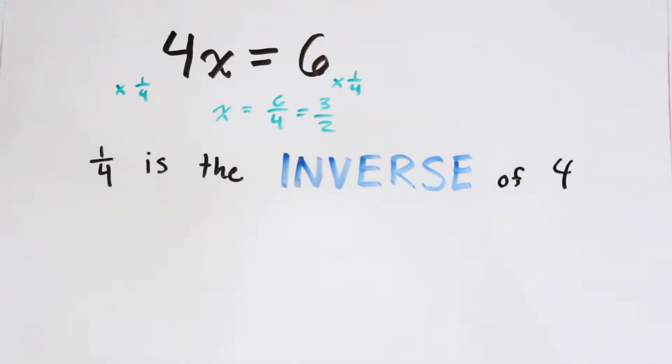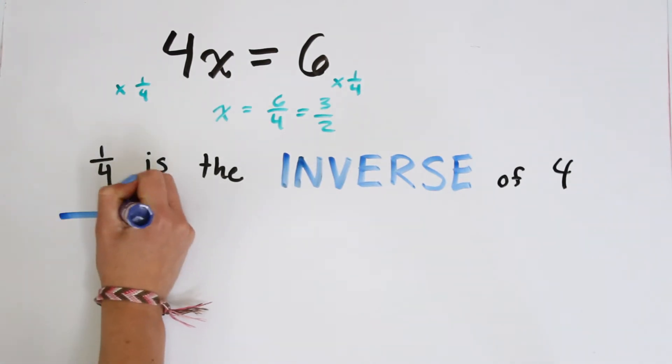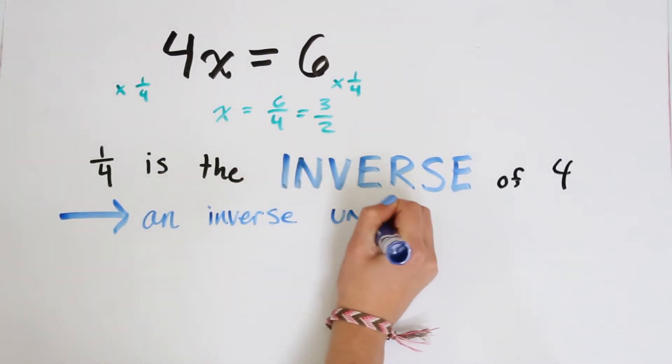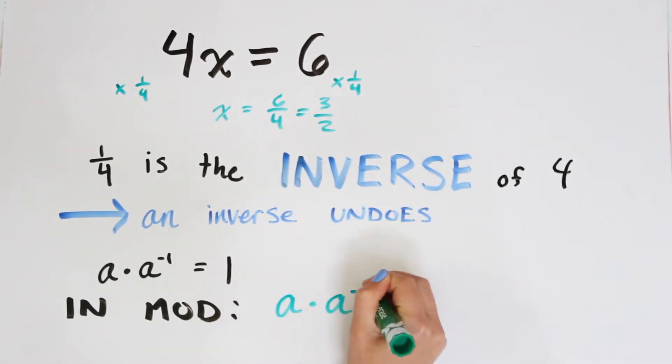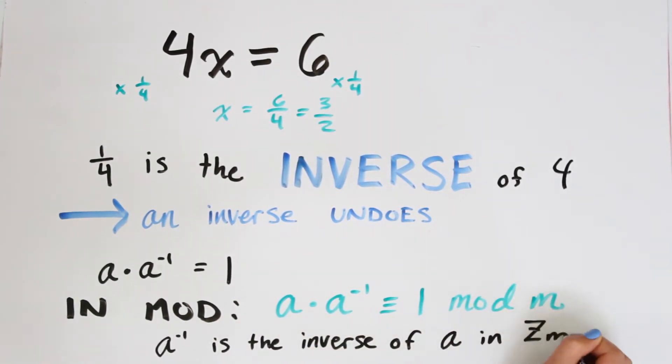So anytime you have an inverse in math the inverse undoes. It's effectively doing nothing if you do an action and then the inverse of that action. So in multiplication we see a times a inverse times x equals x or 1 times x. So therefore a times a inverse equals 1. In mod we say something very similar: a times a inverse is congruent to 1 mod m, because multiplying anything in the modulus world times something which is congruent to 1 is effectively doing nothing.